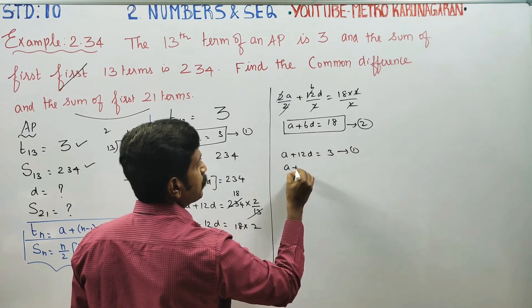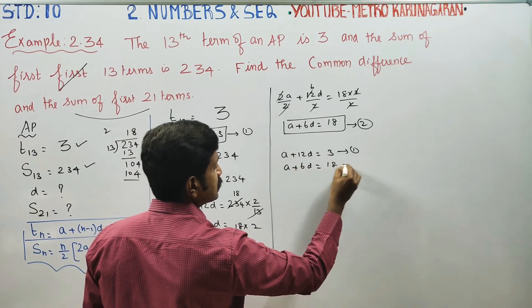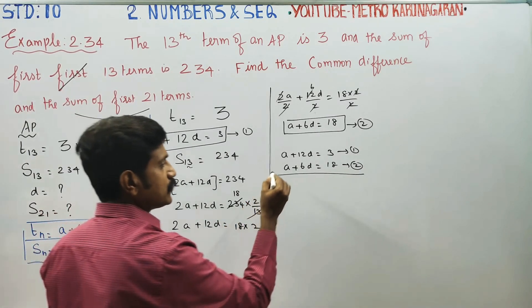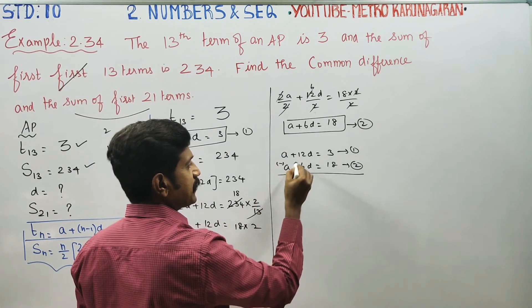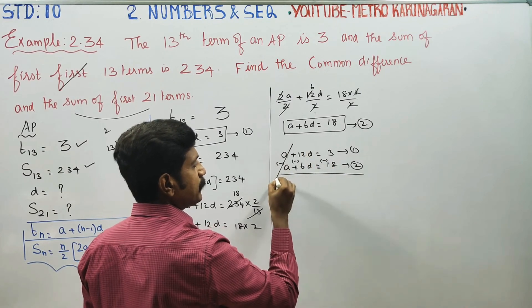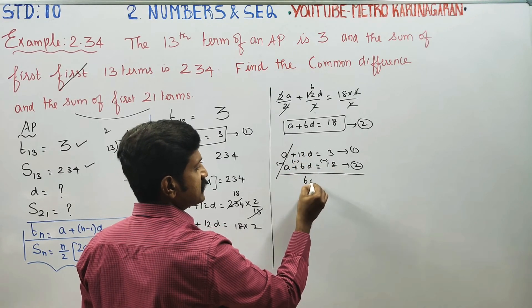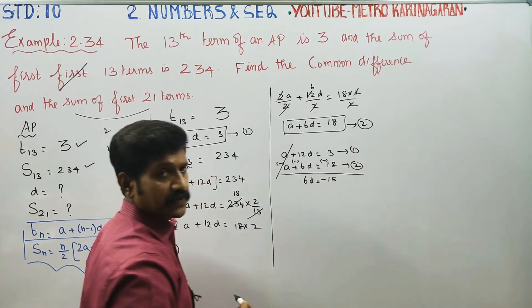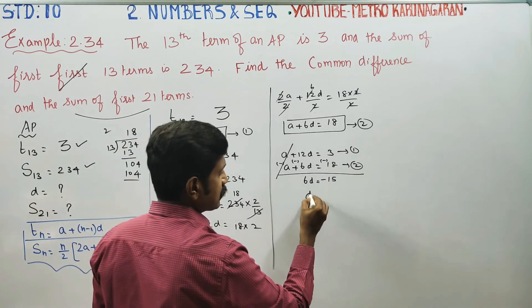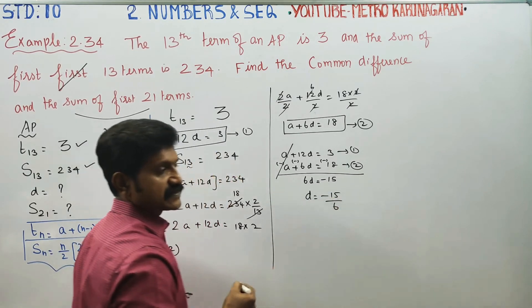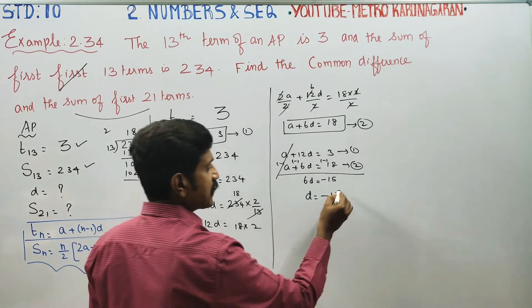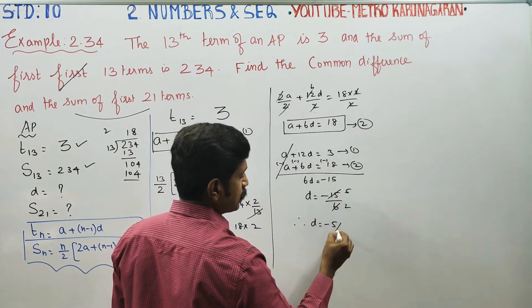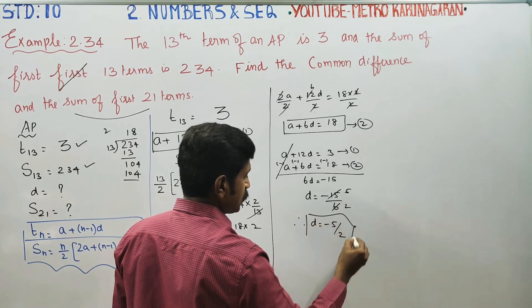Subtract the equations: A cancels out, 6D minus 12D equals negative 6D. 18 minus 3 equals 15. So D equals minus 15 by 6, which simplifies to minus 5 by 2.